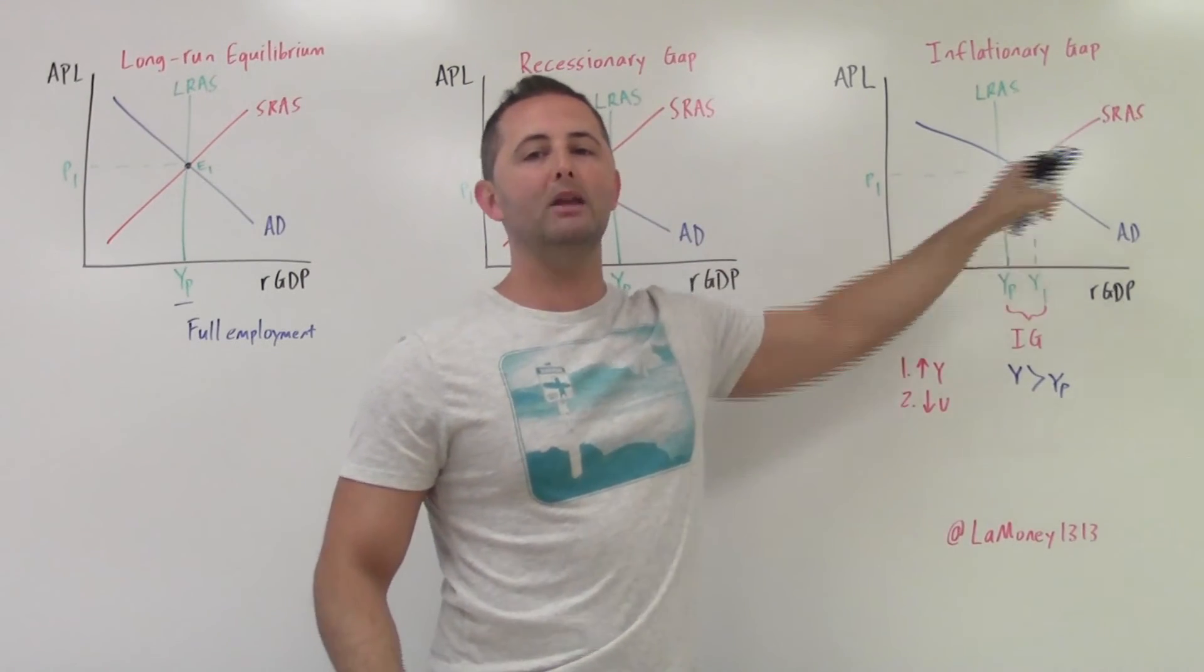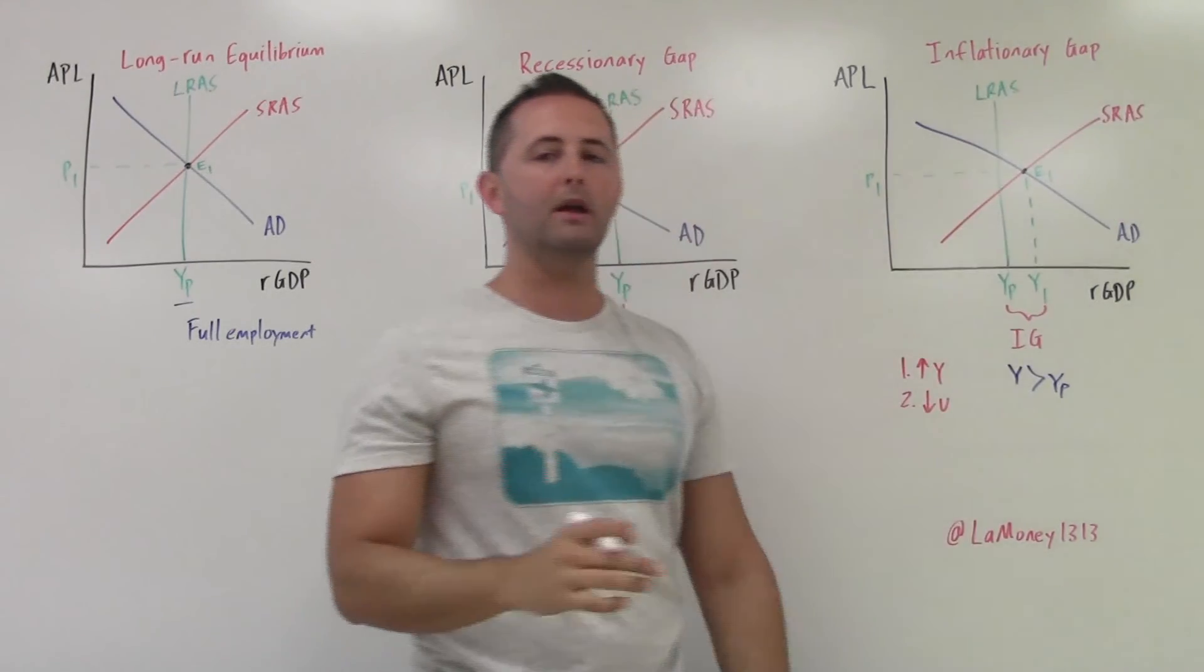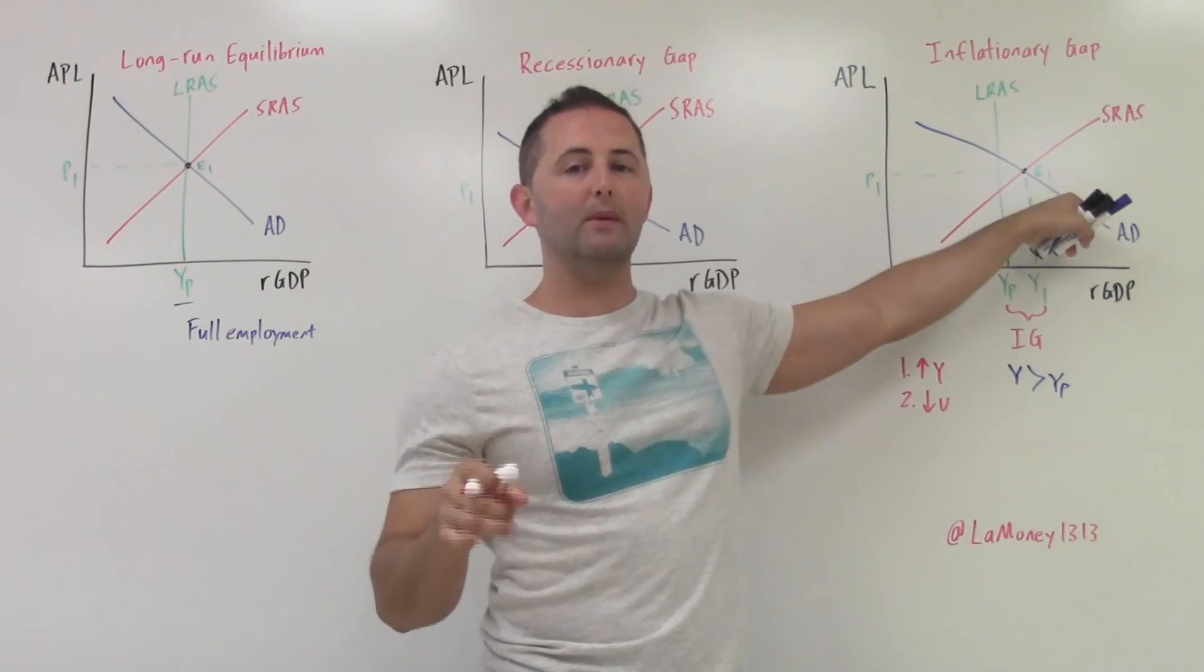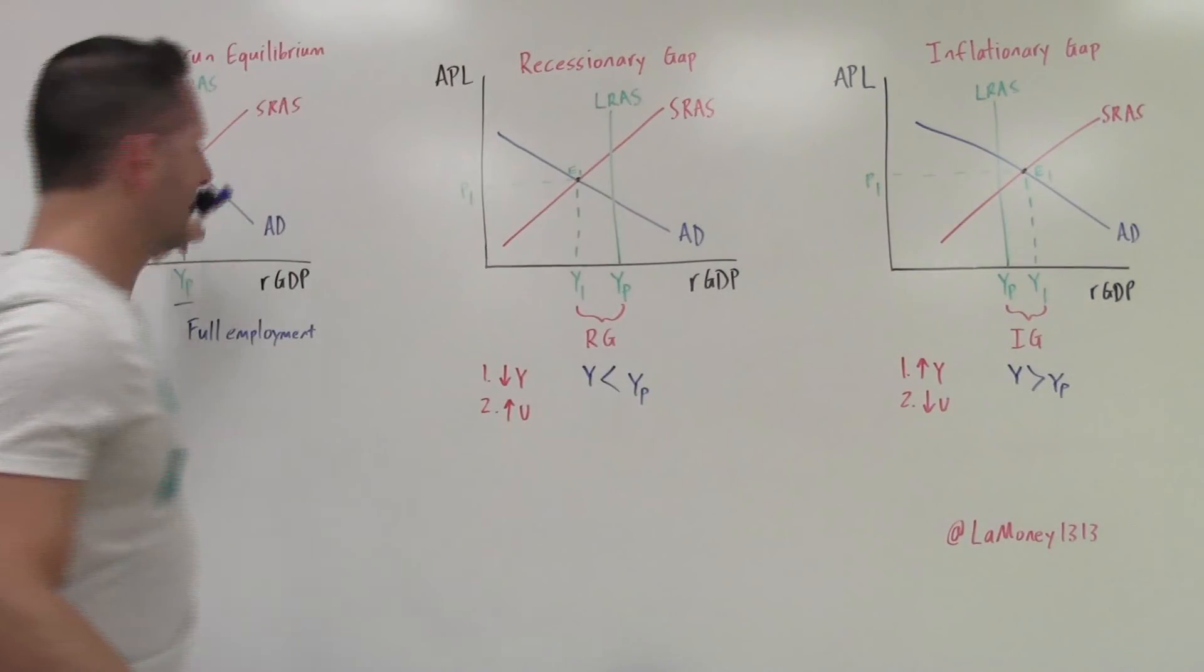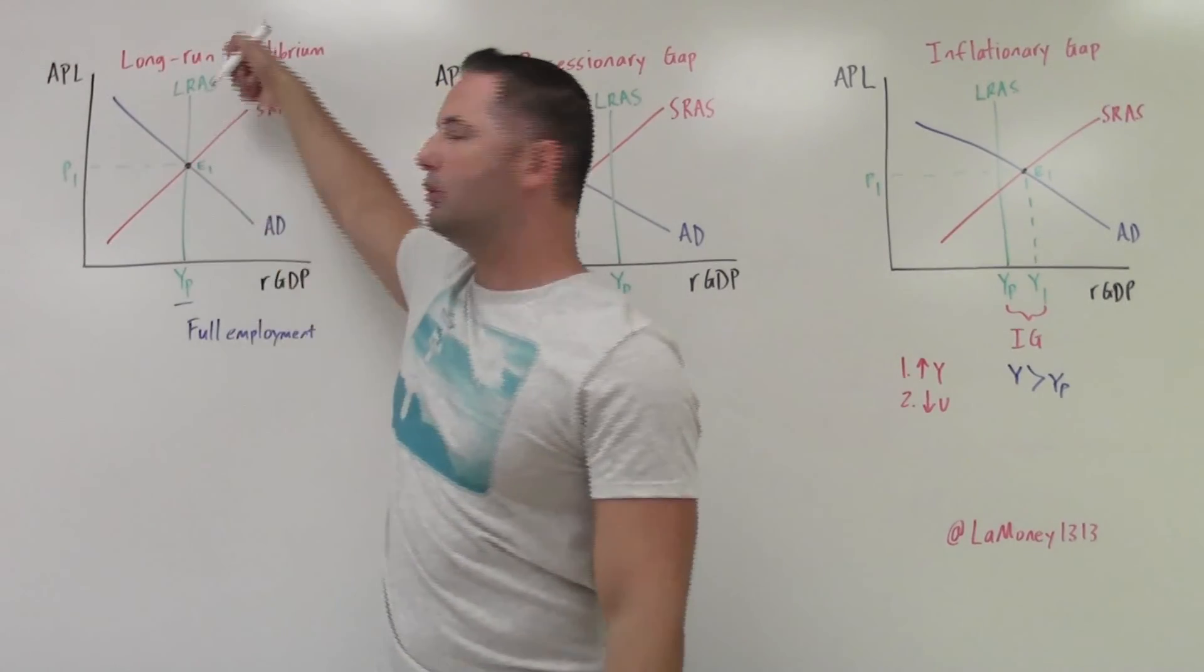So when we are operating at E1 in an inflationary gap, which is anywhere to the right, beyond LRAS, this means that we have low unemployment. So I want us to be able to look at these models and know, long-run equilibrium, we are exactly equal to full employment.